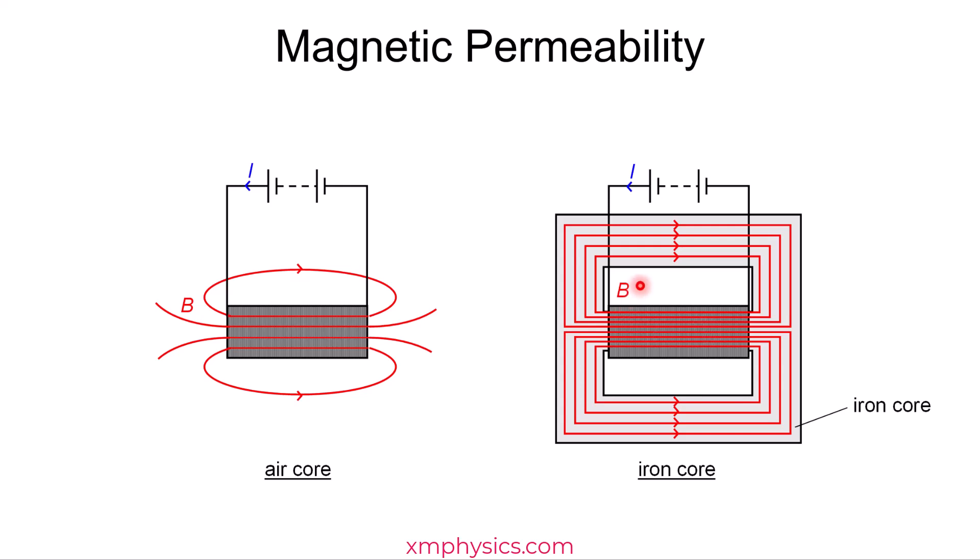Or you can just say that with an air core, the magnetic flux density is given by μ₀NI. μ₀ is the permeability of free space, vacuum. But once you insert the iron core, then the magnetic flux density is given by μNI. But the μ now is the permeability of iron, which is hundreds if not thousands of times larger than the permeability of free space. All right, that's all. Ta-ta!